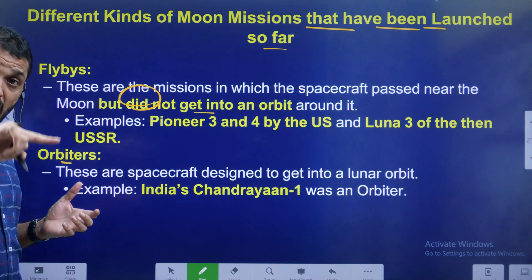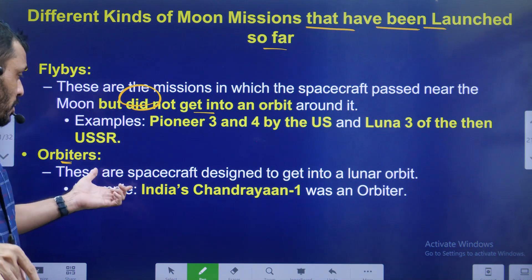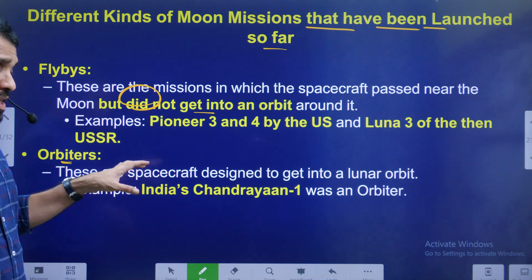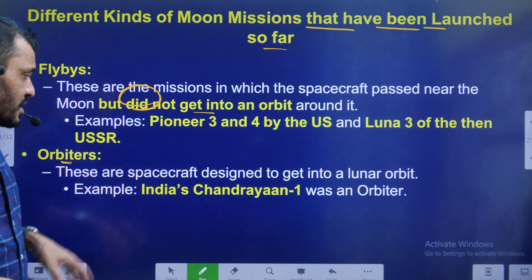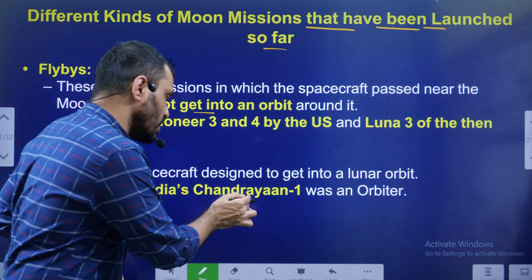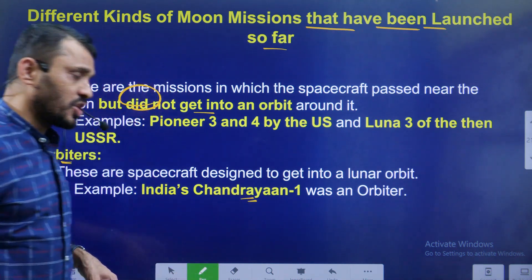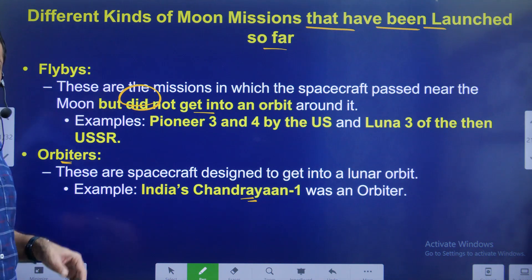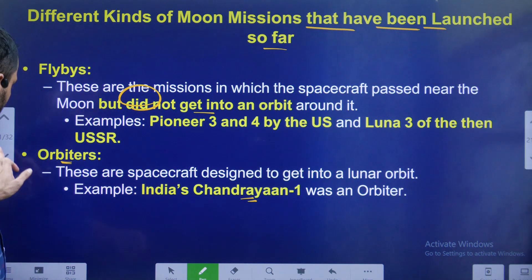Number two: Orbiters — they orbit around the moon but don't land. Best examples are India's Chandrayaan-1 and India's Chandrayaan-2.